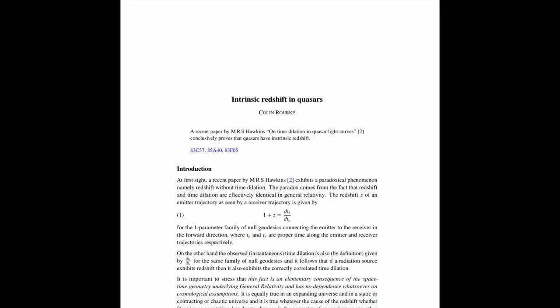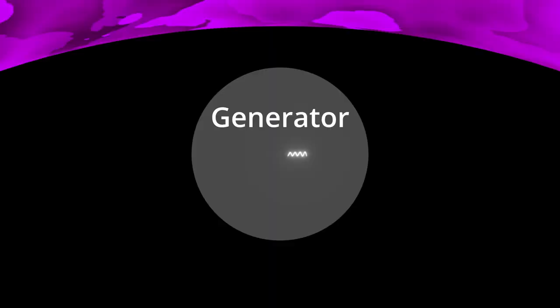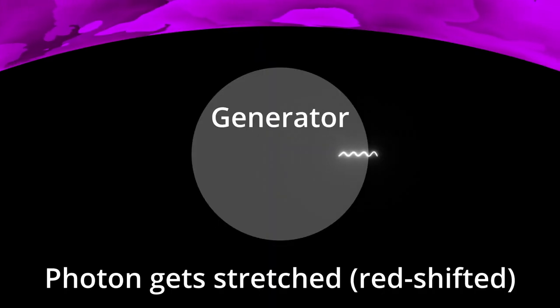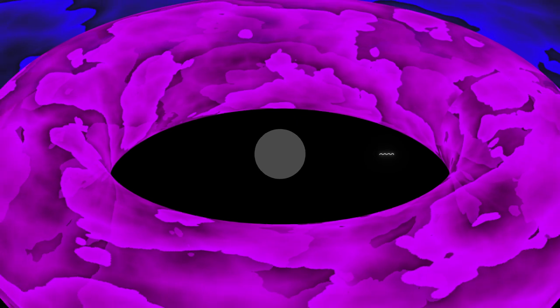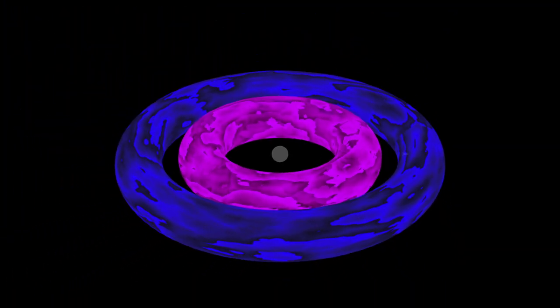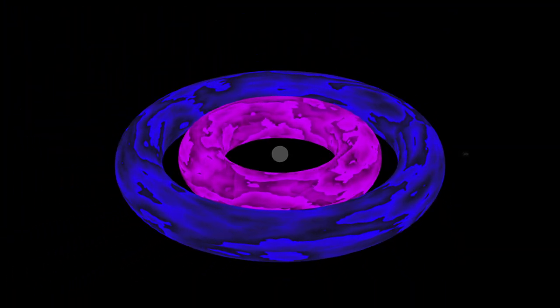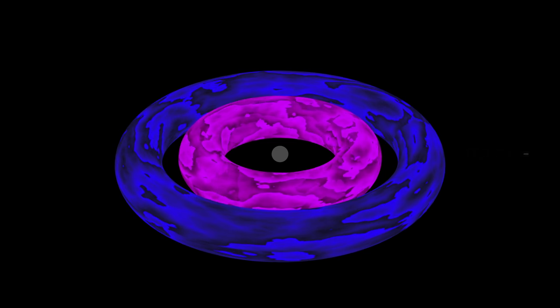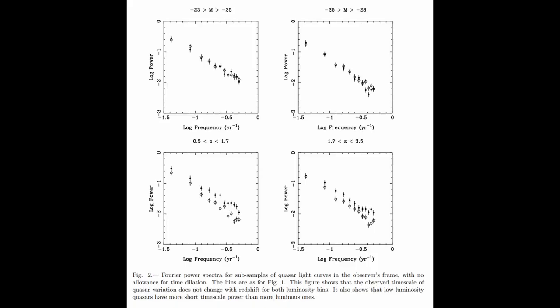So how would this explain Hawking's results? Rourke's idea is that the generator is subject to gravitational redshift because of the black hole nearby and because the modulator is some distance away it is not subject to the same redshift and this explains the dichotomy between Hawking's results.